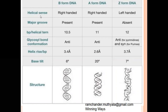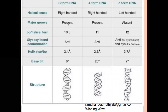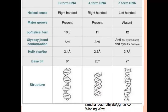B-DNA has a right-handed helical sense and contains major grooves. In each major groove, 10.5 nitrogenous base pairs are present. The glycosyl bond conformations are in anti-parallel position, with 3.4 angstroms of length between the nitrogenous base pairs, and a base tilt of 6 degrees.